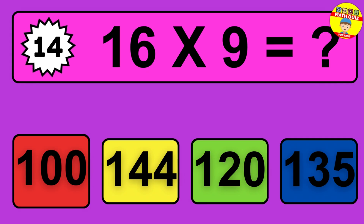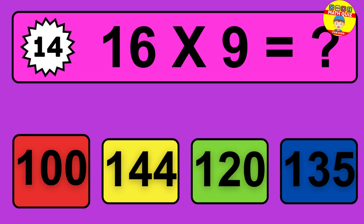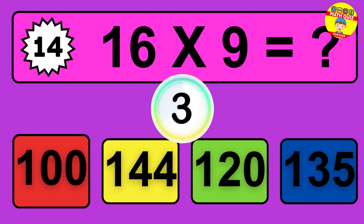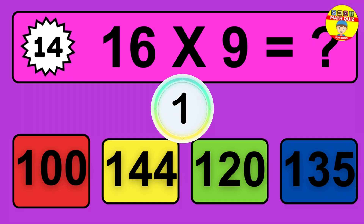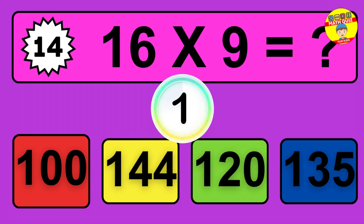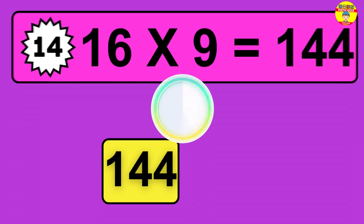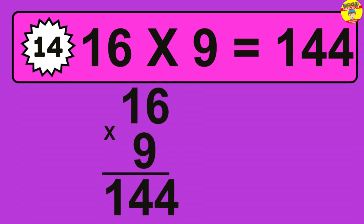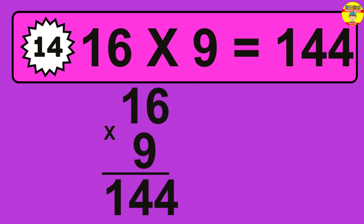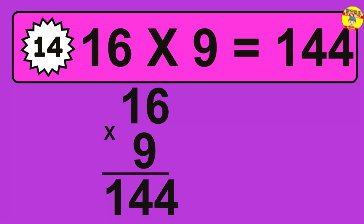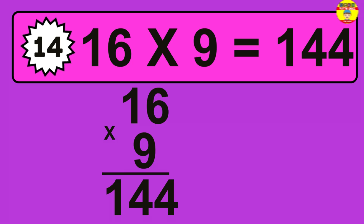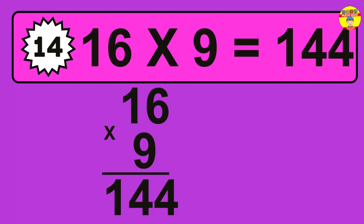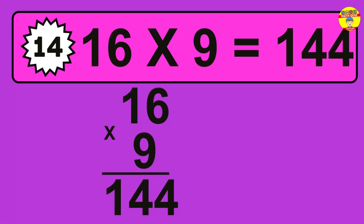Question 14. 16 times 9 equals what? The answer is 16 times 9 is 144. To calculate, we have 16 groups with 9 balls each one. So, how many balls do we have? 144 balls.